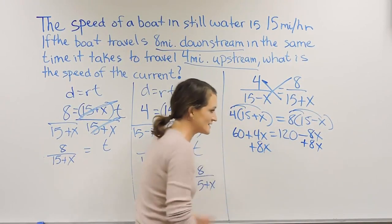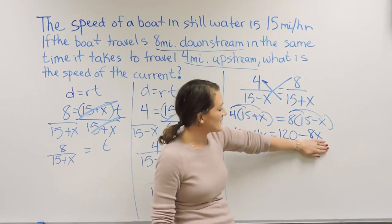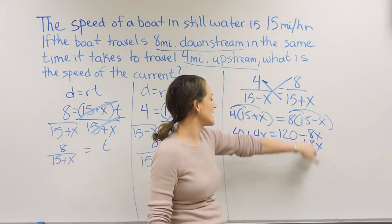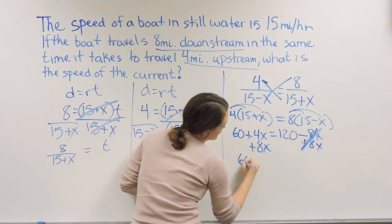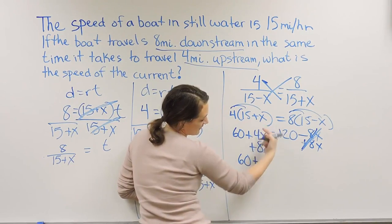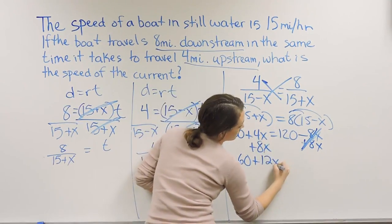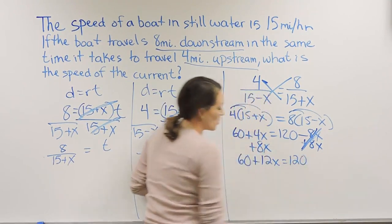Because this is a negative 8X, I can do the opposite and add 8X to both sides. That's going to give me, if I drop down 60, 4X plus 8X is 12X, and that's going to equal 120.